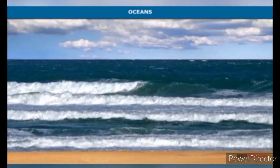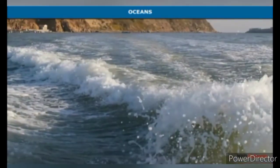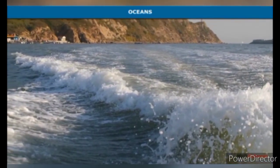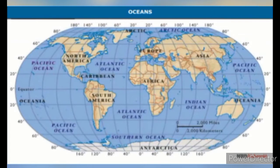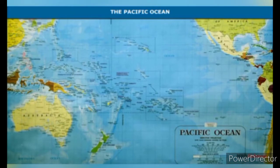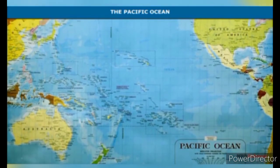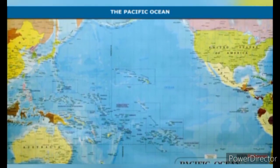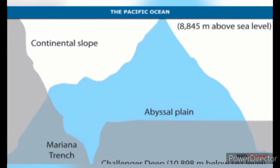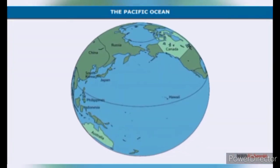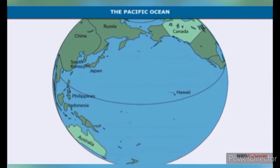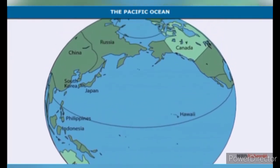Oceans are the major part of the hydrosphere. The three chief movements of ocean waters are waves, ocean currents, and tides. The five major oceans are the Pacific Ocean, the Atlantic Ocean, the Indian Ocean, the Southern Ocean, and the Arctic Ocean. The Pacific Ocean is the largest ocean and spreads over one third of the Earth. The Mariana Trench, the deepest part of the Earth, lies in the Pacific Ocean. It is almost circular in shape, surrounded by Asia, Australia, and North and South America.